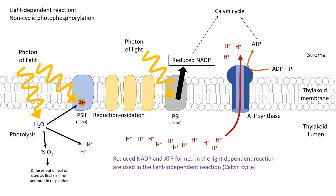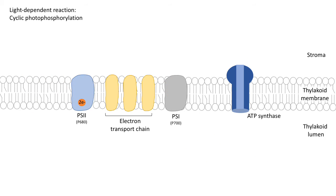Let's move on to cyclic photophosphorylation next. This stage really focuses on photosystem 1. We'll go through the steps discussed in non-cyclic photophosphorylation first to get the electron to photosystem 1, so we can then look at the steps for cyclic photophosphorylation.